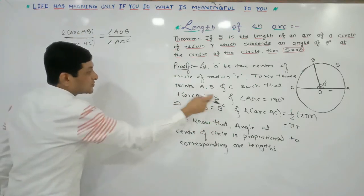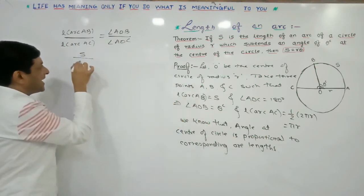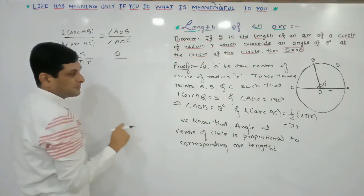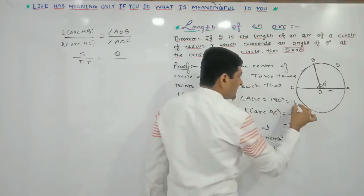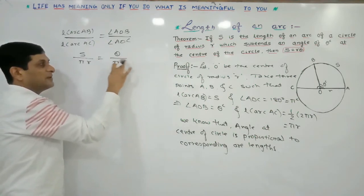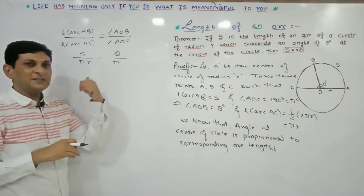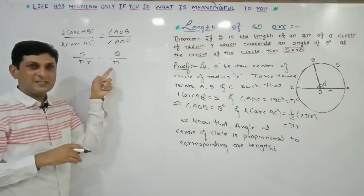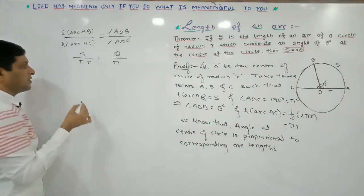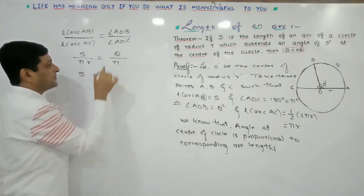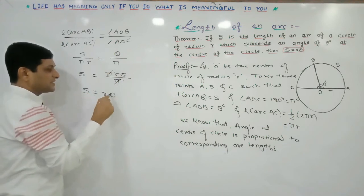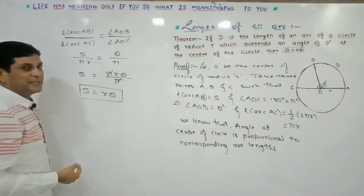Substituting: length of arc AB equals S, length of arc AC equals πR, angle AOB equals theta radian, and angle AOC equals 180 degrees, which in radian is π. So we have S upon πR equals theta upon π. The units of radian cancel. Multiplying both sides by πR, we get S equals πR times theta over π. Pi and pi cancel, giving us S equals R theta, which is our required result.